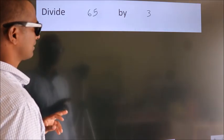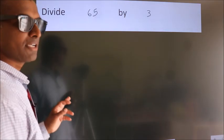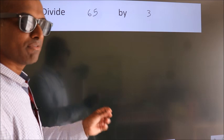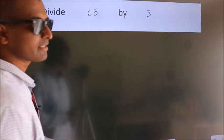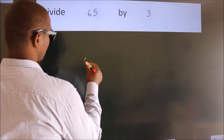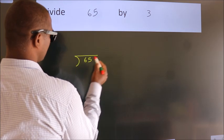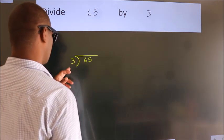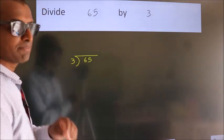Divide 65 by 3. To do this division, we should frame it in this way: 65 here, 3 here. This is your step 1.